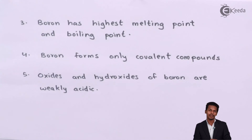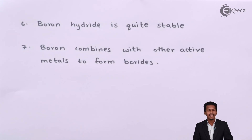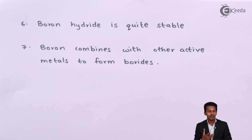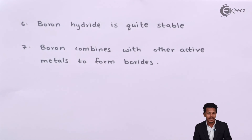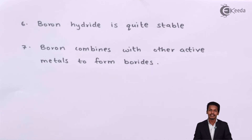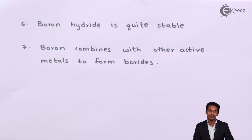There are further points related to hydrides. Boron hydride (BH₃) is quite stable — more stable than aluminum hydride (AlH₃). This is another way in which boron shows different properties compared to the other group 13 elements.